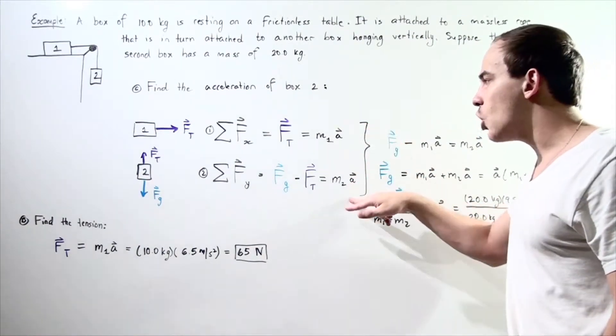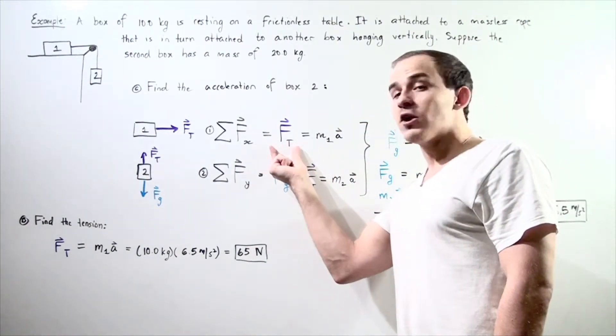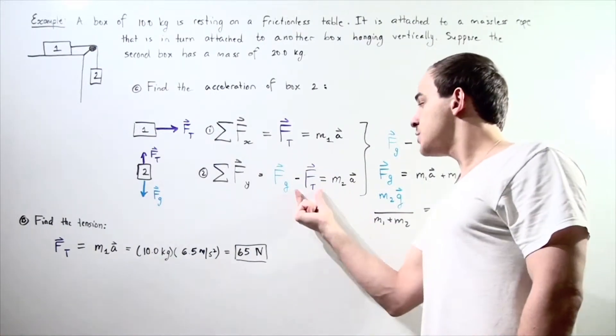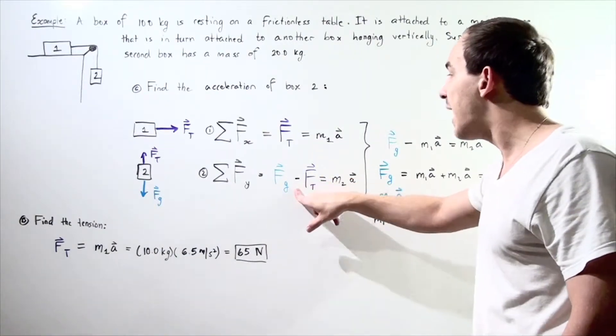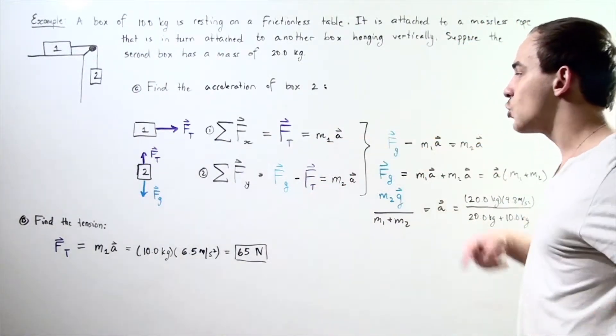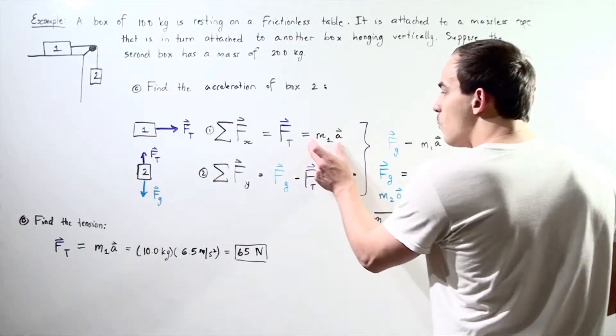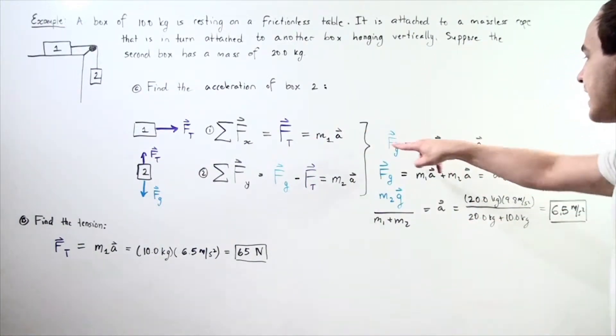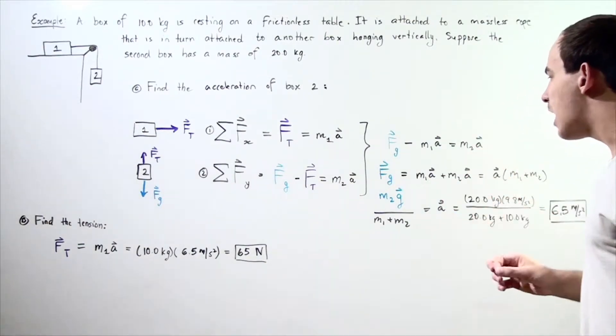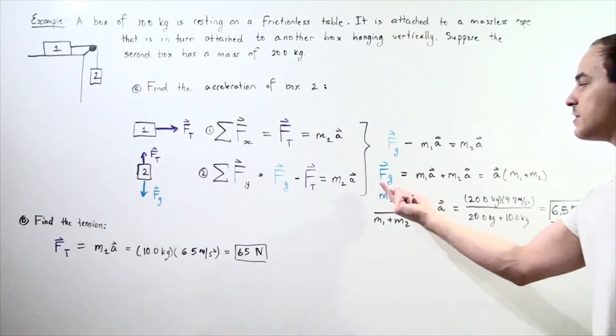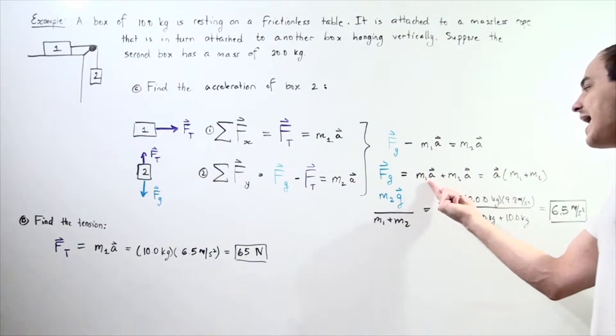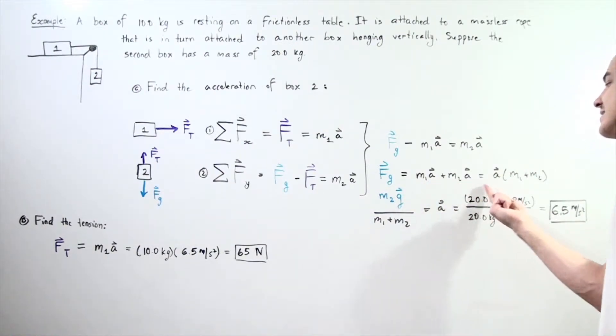We can substitute the tension from the first equation into the second. The force of gravity minus force tension equals F_g - m₁a. Solving for a, we bring all the a terms to one side: F_g = m₁a + m₂a = a(m₁ + m₂).